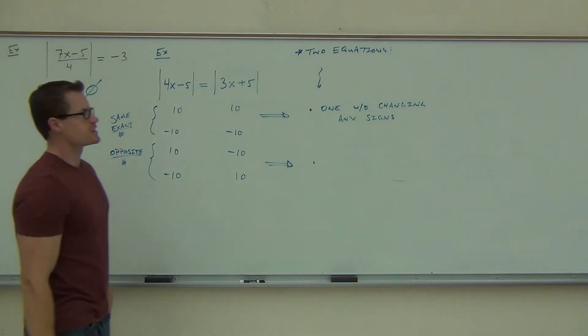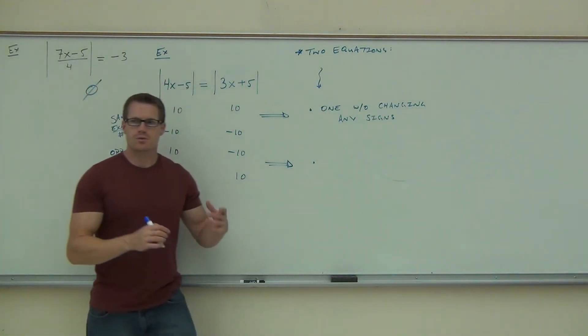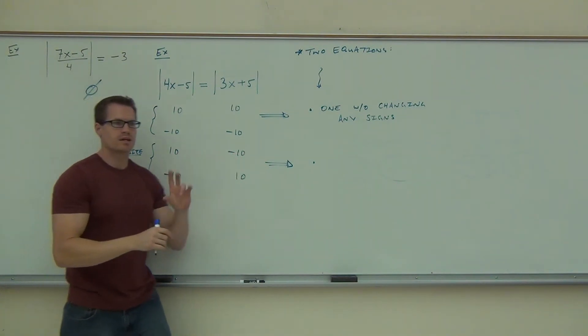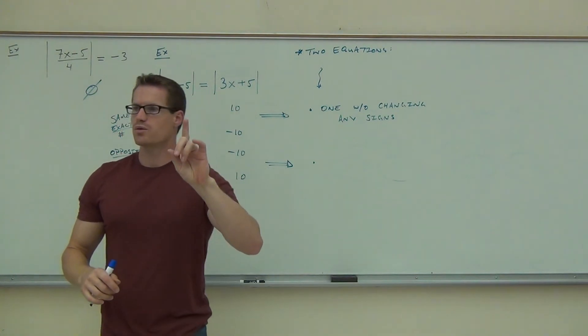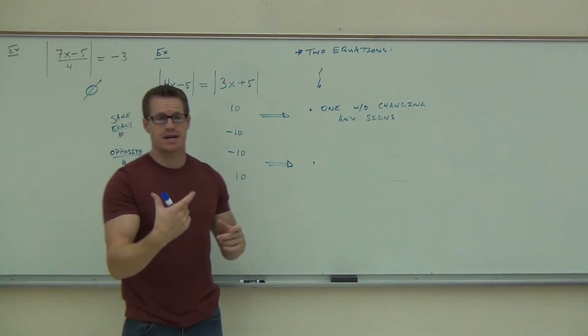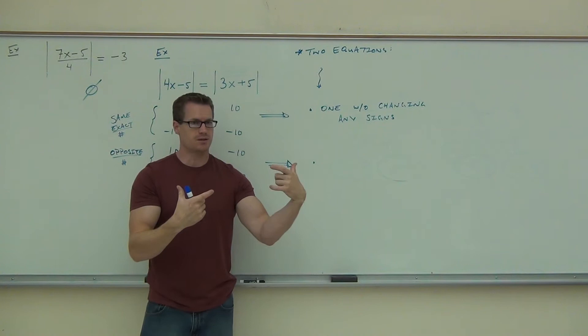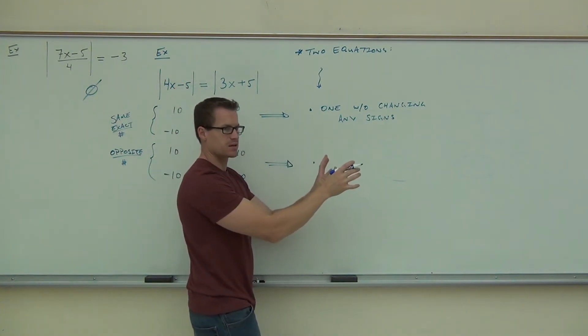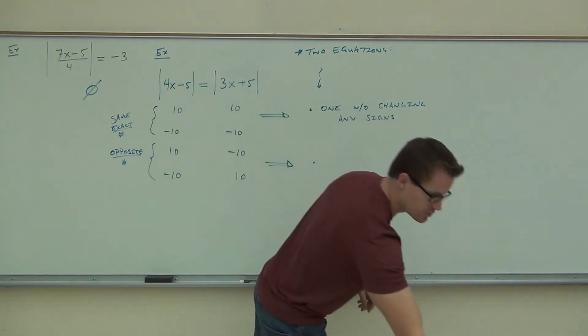The other one says this. The other one says if they're opposite or off by a sign. So this is 10, this is negative 10. Or this is negative 10, this is 10. We need one more equation. We need one where the first one stays the same, but the second one is negative. So one with changing the sign of the second absolute value, or second expression.